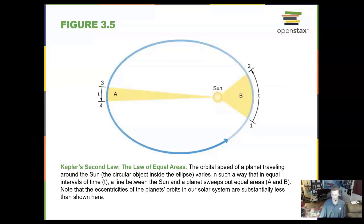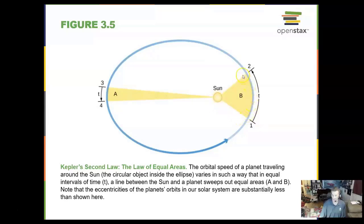Kepler's second law I like to call the pizza law. We can draw out an orbit on slide B and say that takes one month to occur. Over here on slide A, it takes one month to go through the same equal area — like a piece of pie or pizza — carving out the same amount of equal area in A as in B. A planet near the sun has to go fast to cover enough area, while it goes slower when farther away from the sun.